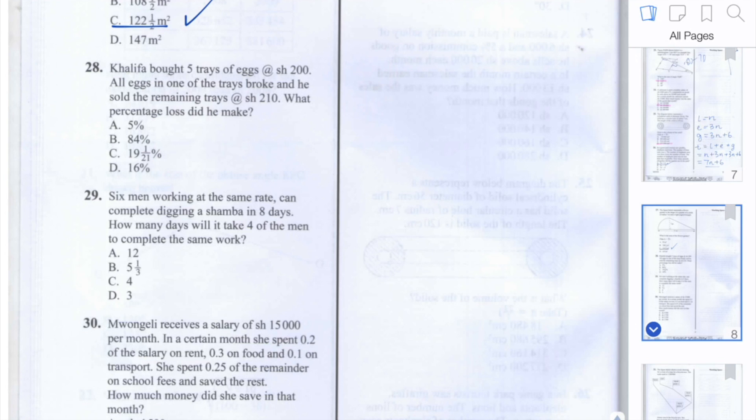So let's first work out the price at which he bought the eggs for. He bought five trays and each of them cost 200 shillings. So the total amount he spent buying the eggs was a thousand shillings.